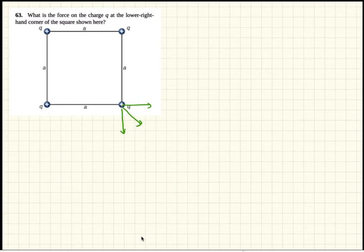Now this distance is the diagonal of the square, so it is square root 2a. Okay, all right, let's label these forces. We'll call it F1, F2, F3.